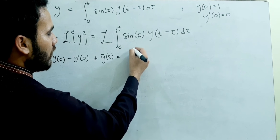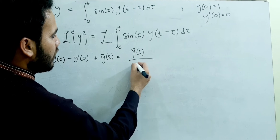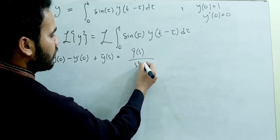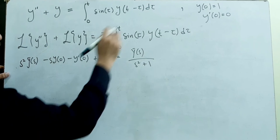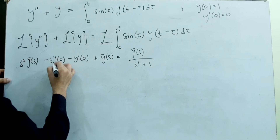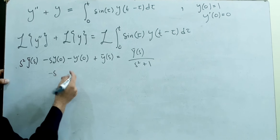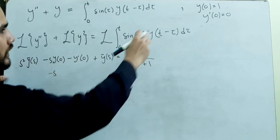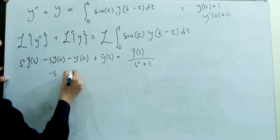By the convolution theorem the right-hand side becomes y̅(s) divided by (s² + 1). Using the initial conditions y(0) = 1 and y'(0) = 0, the equation becomes: s² y̅(s) minus s minus 0 plus y̅(s) equals y̅(s)/(s² + 1).